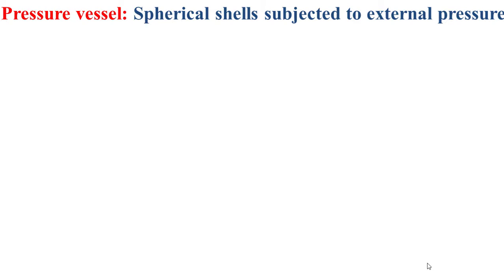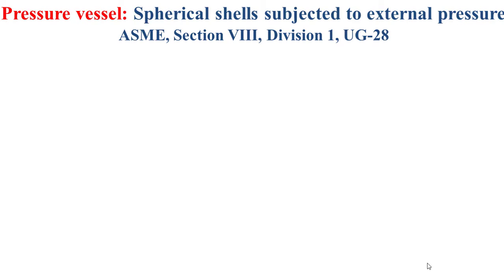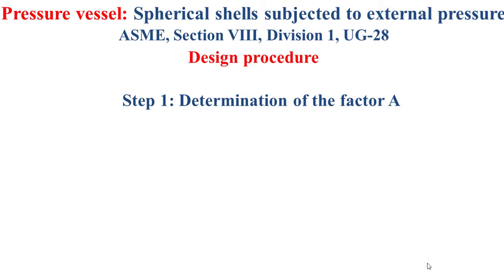The sizing of the thickness of a spherical shell subjected to external pressure is based on ASME Section A, Division 1, UG-28. We have a design procedure where Step 1 is about the determination of a certain Factor A. Factor A is determined by the formula shown in the slide. RO refers to the outer radius of the spherical shell, and T is a pre-selected thickness — we can take the required thickness of the spherical shell when it is subjected to internal pressure.